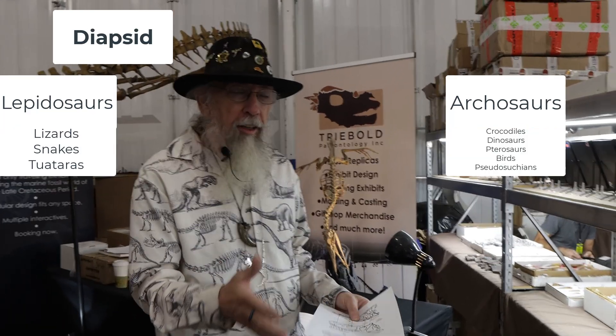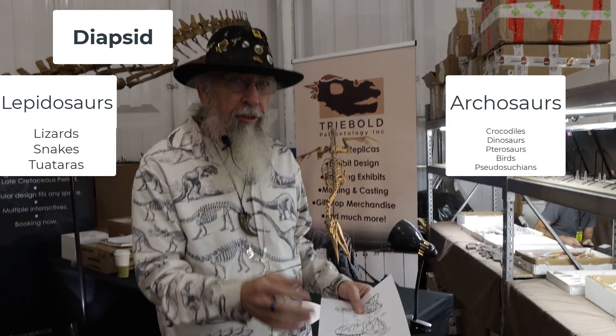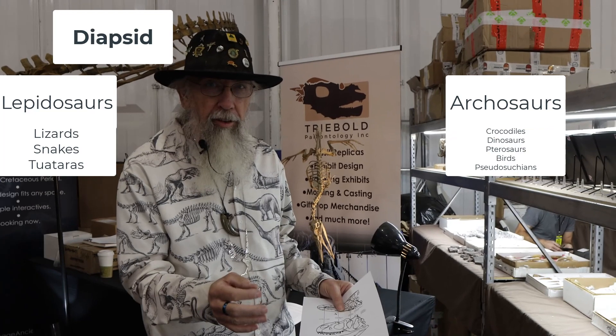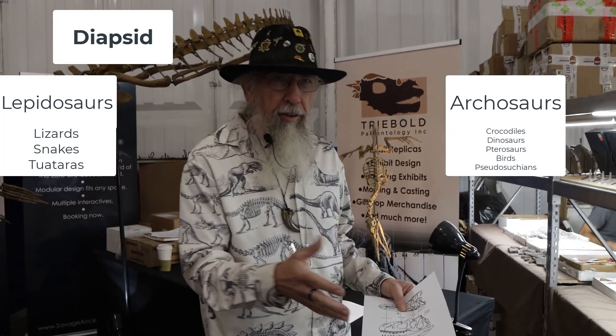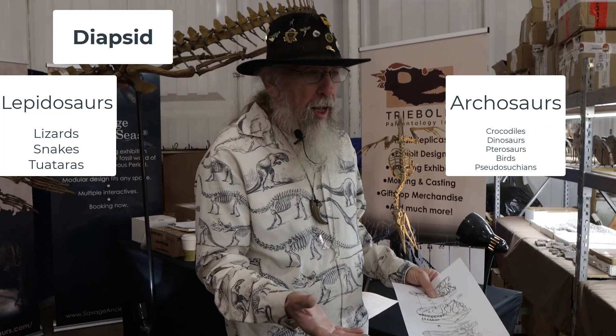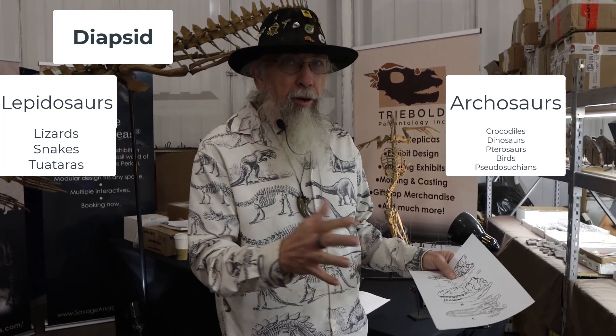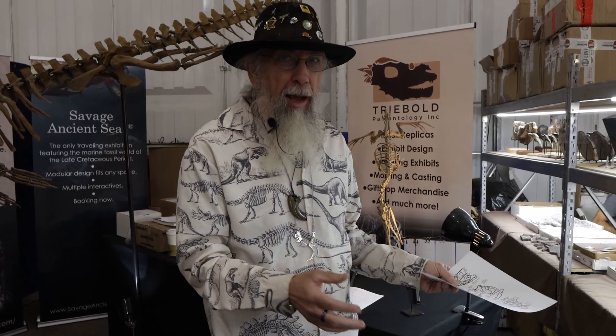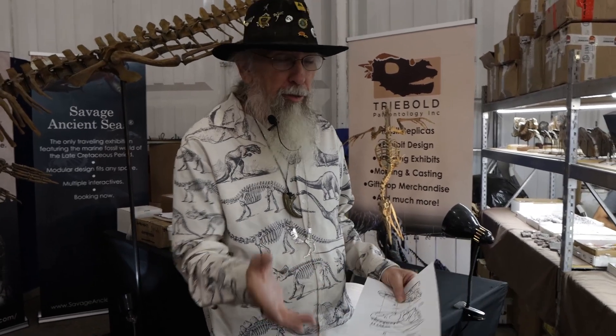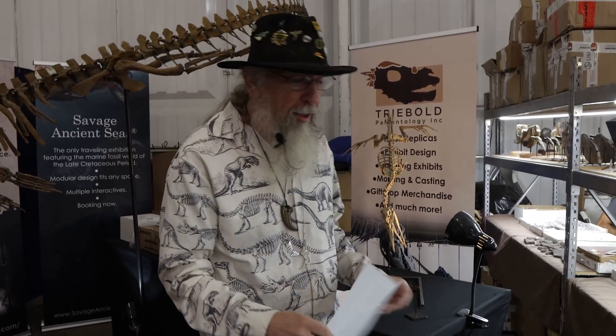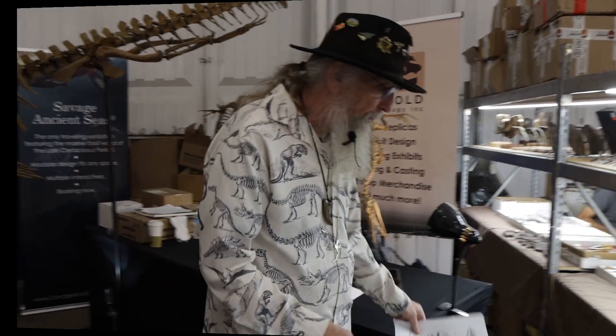Archosaurs include your crocodiles, dinosaurs, pterosaurs, birds, and pseudosuchians. Even though they're both diapsids, they're totally two different groups — it's like apples and oranges, which will be important later on in the discussion. Now what got me started in this whole thing was actually this book.